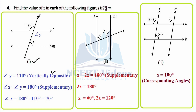For the second figure, l and m are parallel, so the property of interior angles on the same side of a transversal being supplementary applies. This figure may take any orientation — you must have the observation power to identify parallel lines and transversals. Here x plus 2x equals 180°, so 3x equals 180°, giving x equals 60°. Therefore 2x equals 120°.